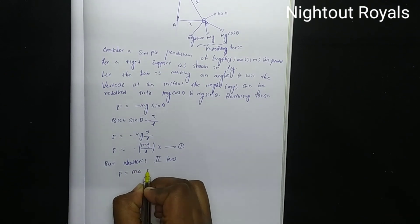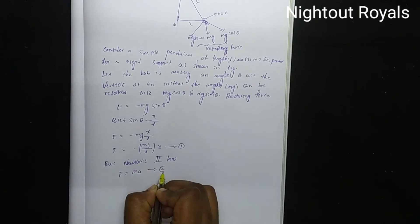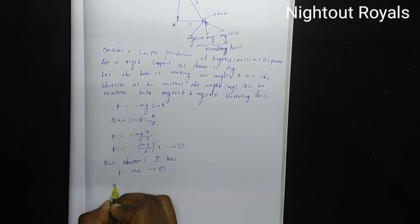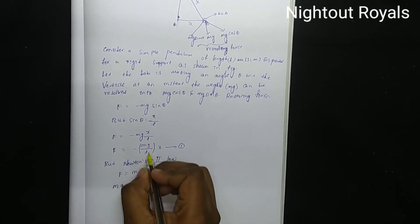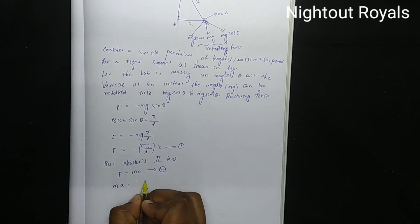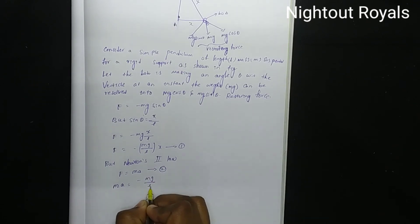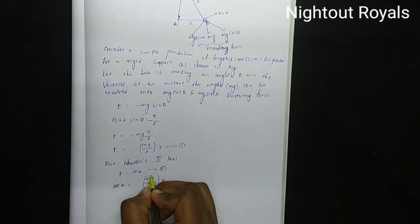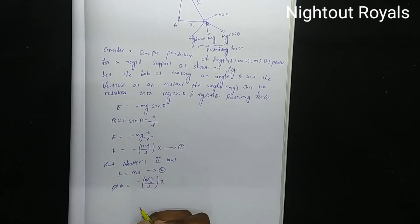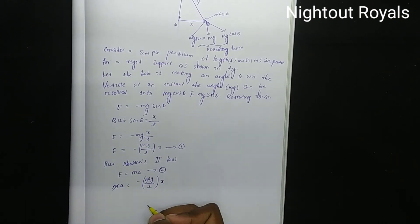By Newton's second law of motion, F equals ma. So ma equals equation 1: minus Mg by L into x. The mass M cancels out.